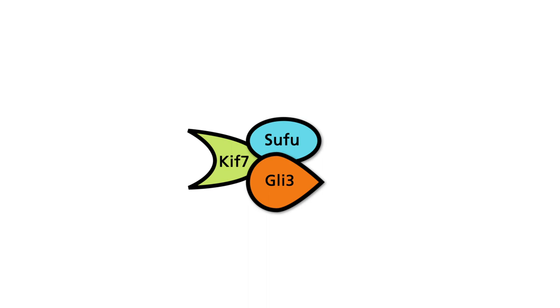In the absence of a hedgehog ligand, hedgehog-responsive genes are suppressed. The main transcriptional suppressor is GLI III, shown here in the animation. In the absence of hedgehog binding, GLI III is sequentially phosphorylated at the C-terminus by protein kinase A, glycogen synthase kinase 3-beta, and casein kinase 1.